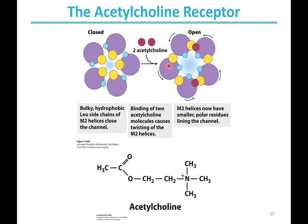Two acetylcholine molecules must bind the nicotinic acetylcholine receptor for it to open. When that happens, the M2 helices rotate, burying the hydrophobic residues and exposing small hydrophilic or polar residues toward the inside of the channel. The channel is now open for ions to move through and interact with those polar residues. Acetylcholine itself contains the choline group — two carbons with a trimethylated nitrogen with a positive charge — with an acetyl group attached.